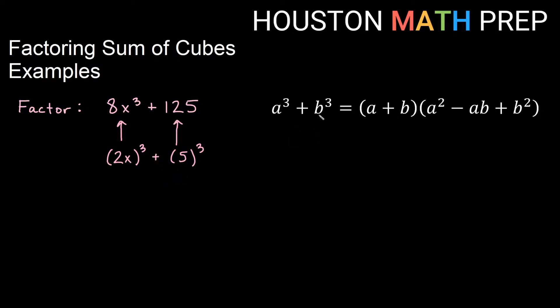We have add in the middle, so we're using our sum of cubes formula. Here we're saying in the formula that a is 2x and b is 5. So we'll go ahead and use our formula. We'll say 8x³ + 125 equals short factor, just has a and b in it, so I put 2x and 5. And remember the way we do this, we go back and assign the signs last.